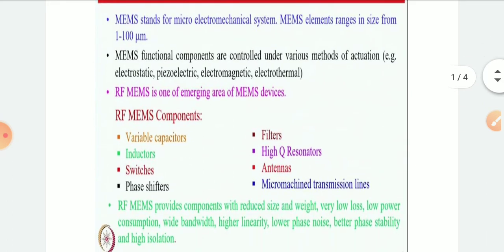Here are some components of RF MEMS. First one is variable capacitors, inductors, switches, phase shifters, filters, high quality resonators, antennas, and micromachined transmission lines.